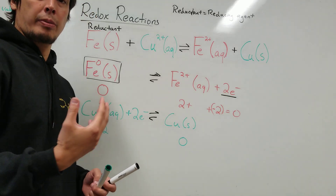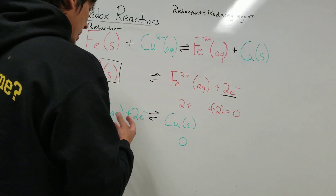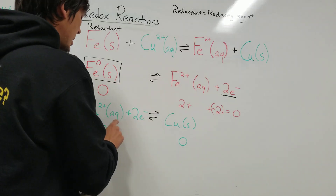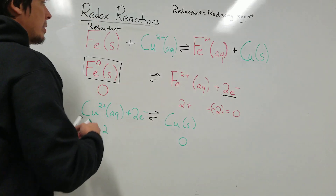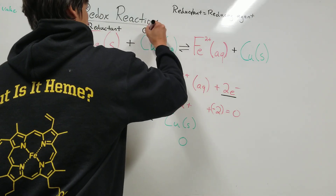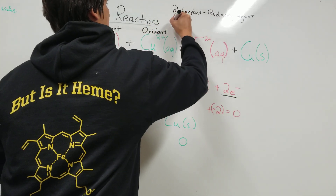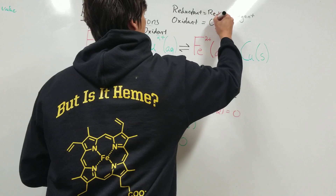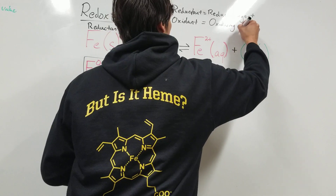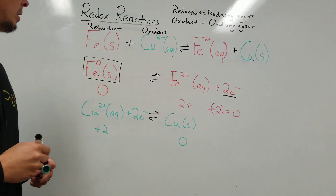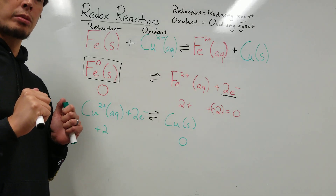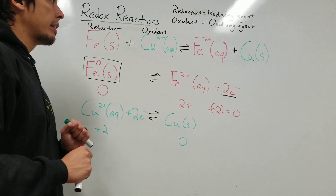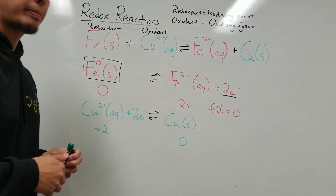The oxidant, on the other hand, will take the electrons — it's the species whose half reaction has electrons on the reactant side. In the copper reaction, the electrons are on the reactant side, so copper 2 is the oxidant, also known as the oxidizing agent. So when looking at redox reactions, we want to identify what's the reductant — what's donating electrons — and what's the oxidant — what's receiving the donated electrons.